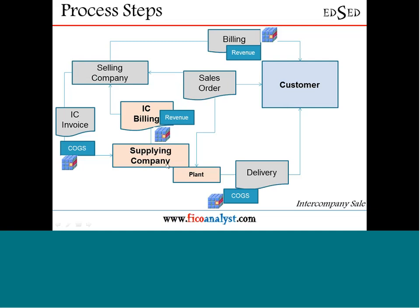When the delivery is done, billing is first done by the selling company code to the customer — this is regular customer billing. The revenue is recognized in the selling company code. The supplying company code also has to bill somebody — that billing is called IC billing, where inter-company revenue is generated. The supplying company code doesn't care about the end customer; it cares about the selling company code — this is the inter-company billing.